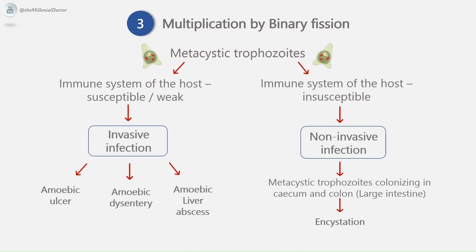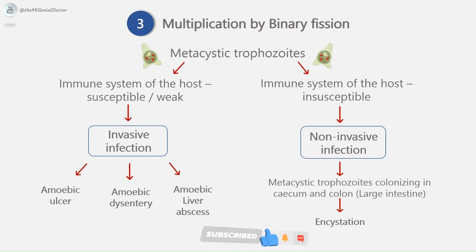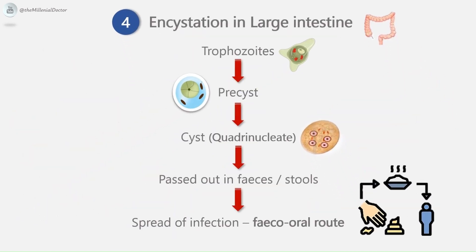Further development depends on two factors. If the host's immune system is weak or susceptible, the metacystic trophozoites cause invasive infection resulting in amoebic ulcer, amoebic dysentery, or amoebic liver abscess. If the immune system is strong, it leads to non-invasive infection: the metacystic trophozoites colonize in the cecum and colon. The optimal habitat is the submucosal tissue of the cecum and colon, where they lodge in glandular crypts and grow by binary fission. Some develop into precystic forms and cysts, which are passed in feces to repeat the cycle.